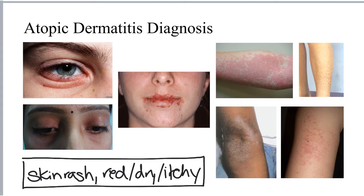On this slide, I am demonstrating some alternate signs and symptoms that can occur in addition to the crusty, itchy, red skin rash. These additional signs and symptoms include eyelid swelling, eyelid hyperpigmentation, inflammation of the skin on and around the lips, dry leathery skin, and the presence of hives and itching in various parts of the body.